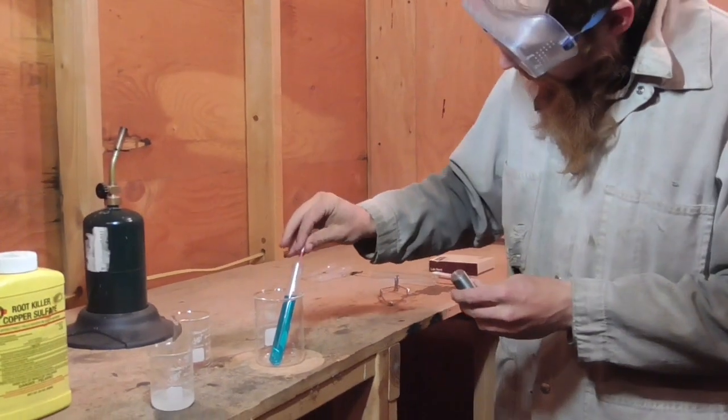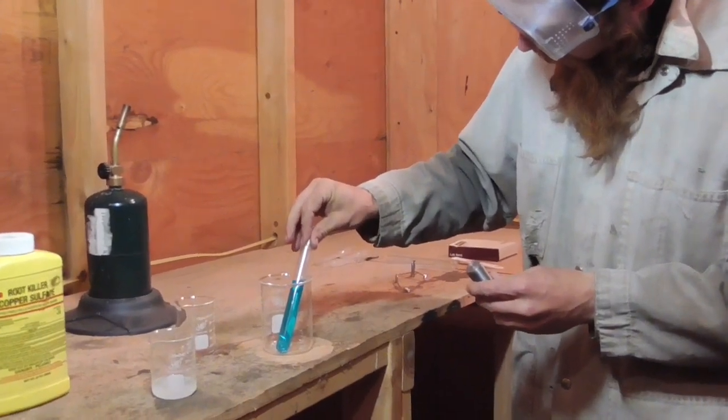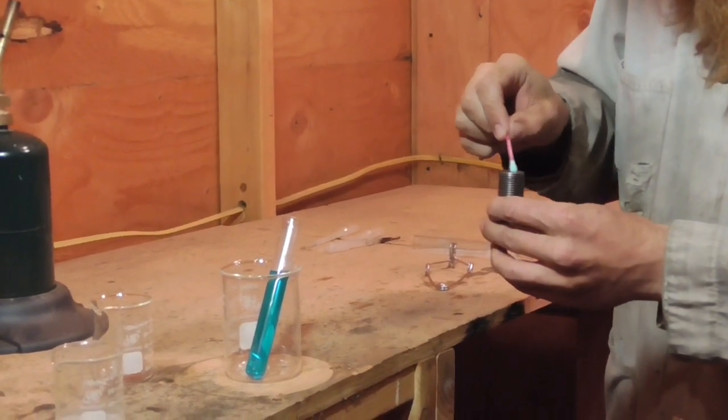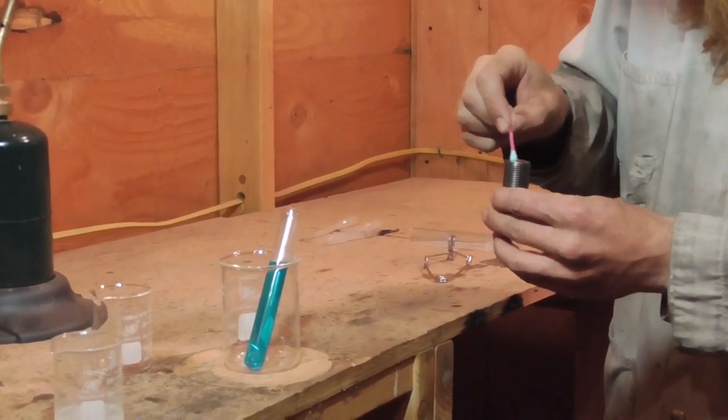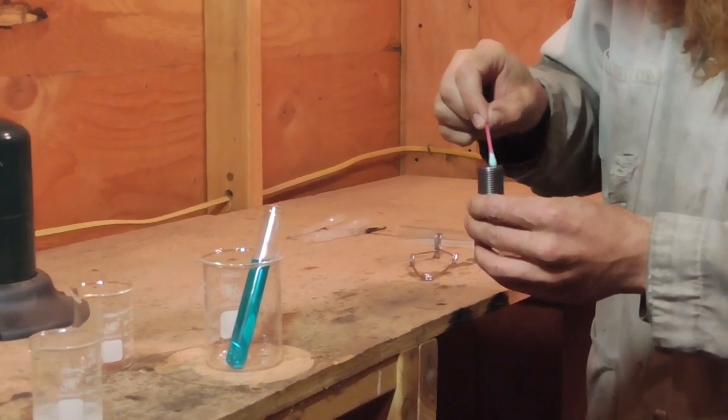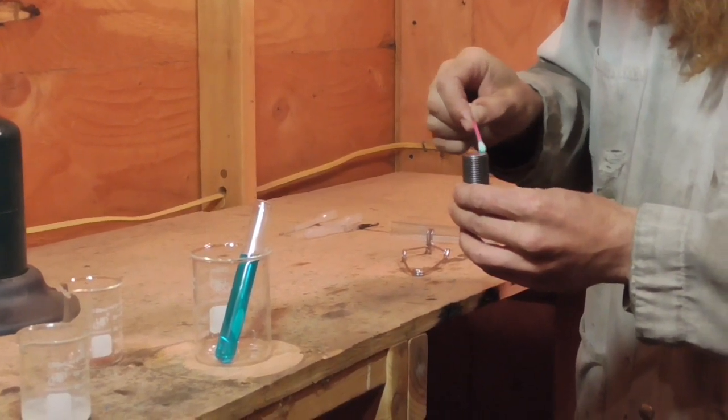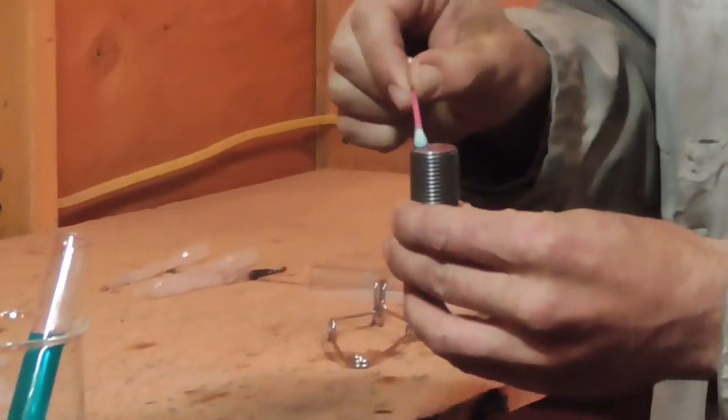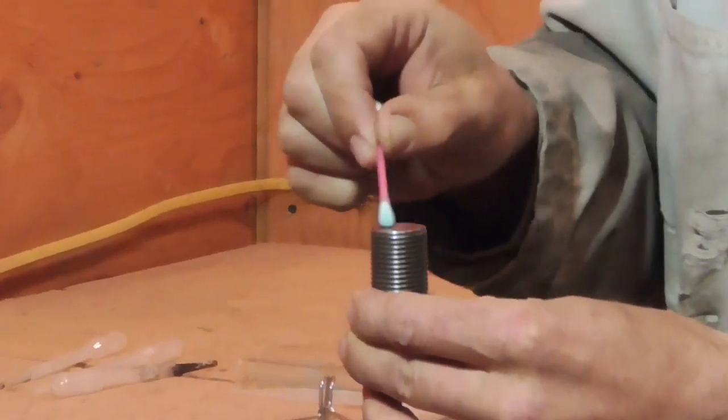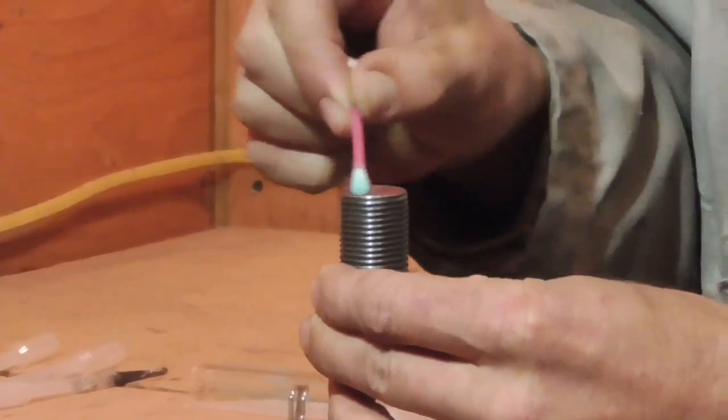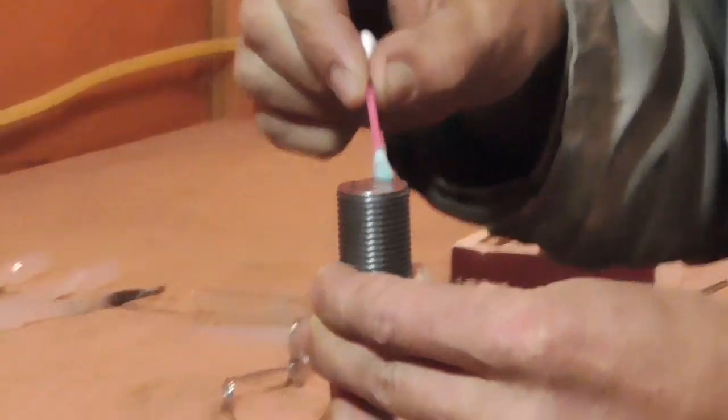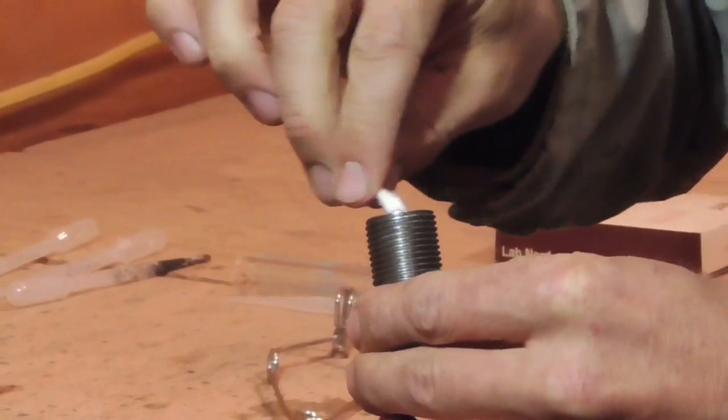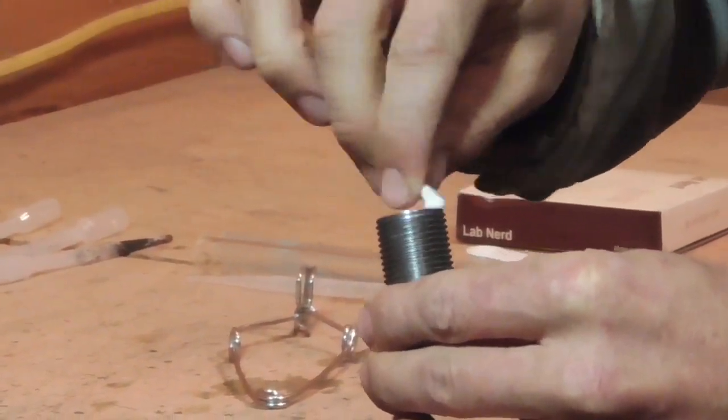Now if we take some of our acidic solution of copper sulfate and dip a swab in it and rub it on a piece of steel—I don't know how well you can see this on camera, but we have a layer of copper plating out on the surface of the steel. I'll dry that off with the other end of the swab here, and we'll give you a closer look.